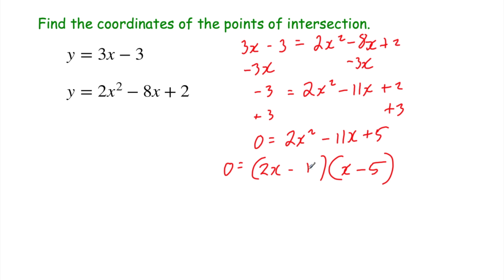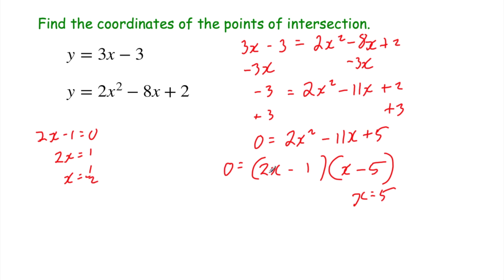So 0 equals (2x minus 1)(x minus 5). Setting each bracket to zero: x minus 5 equals 0 gives x equals 5. For 2x minus 1 equals 0, add 1 to get 2x equals 1, then divide by 2 to get x equals one half. So x equals one half or x equals 5.